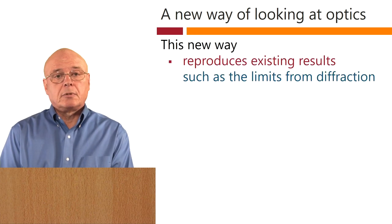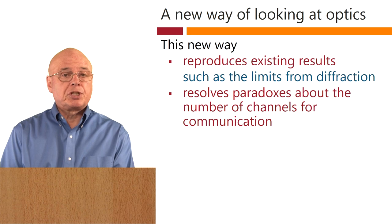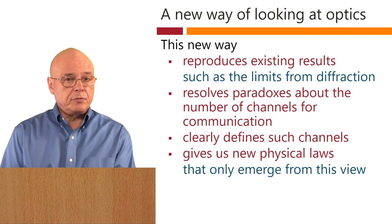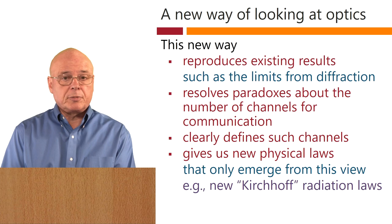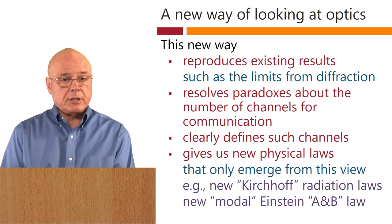This new way of looking at optics reproduces existing results, such as the limits from diffraction. It also resolves paradoxes about the number of channels for communication with optics, clearly defines these channels, and gives us new physical laws — laws that only apply when we take this view. An example is new Kirchhoff radiation laws that we simply did not have before, and a new version of Einstein's A and B coefficient argument — a modal version that is actually much simpler. As I've hinted, this new approach is based on a kind of modes, and we like ideas of modes because they can be very economical — we may just need a few mode amplitudes instead of the field at every point to describe what's going on.